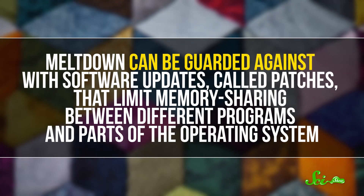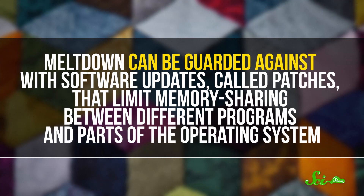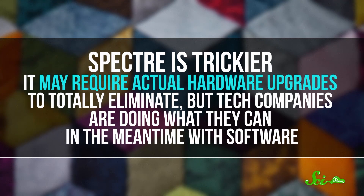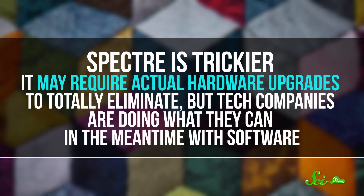At first, computer scientists thought the only way around either security flaw would be to physically replace all of the exploitable CPUs. But it turns out there are some things we can do without going that far. Meltdown can be guarded against with software updates called patches that limit memory sharing between different programs and parts of the operating system. Spectre is trickier — it may require actual hardware upgrades to totally eliminate. But tech companies are doing what they can in the meantime with software. Microsoft, Apple, Google, and Linux have all been releasing software patches to try and minimize security risks, and Intel is publishing updates to its firmware, the permanent read-only software that lives on their processors.